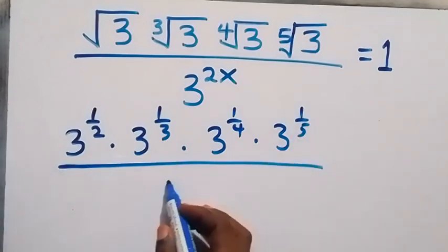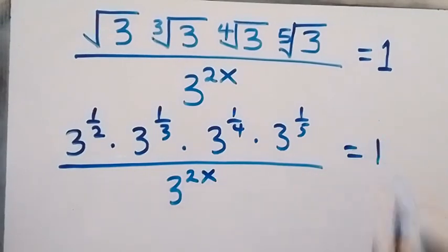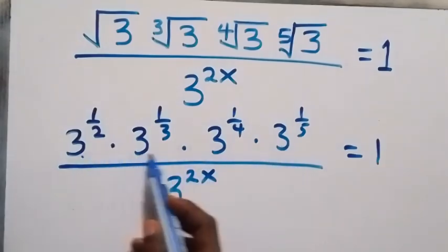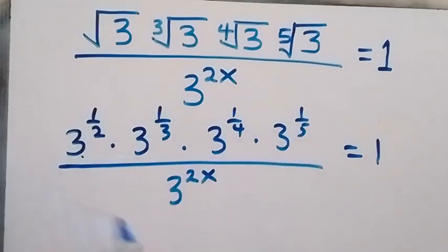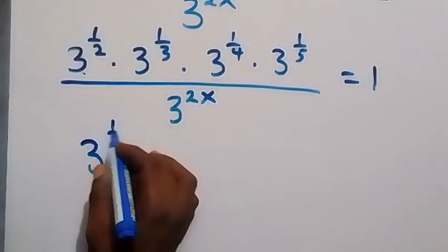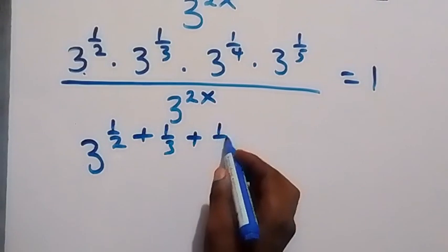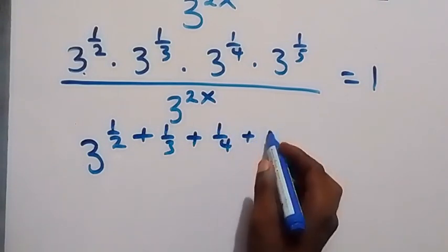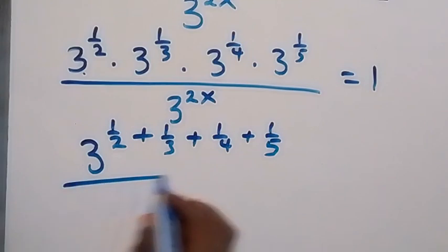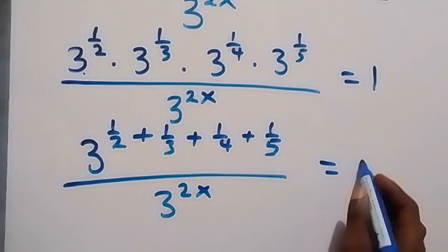Then divided by 3 raised to power 2x, which equals 1. When we apply the law of indices — since we have the same base and they are multiplied — we can add the powers. This becomes 3 raised to power (1/2 + 1/3 + 1/4 + 1/5), all divided by 3 raised to power 2x, equals 1.